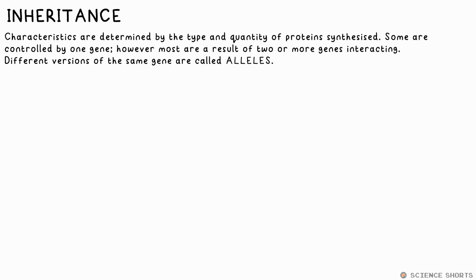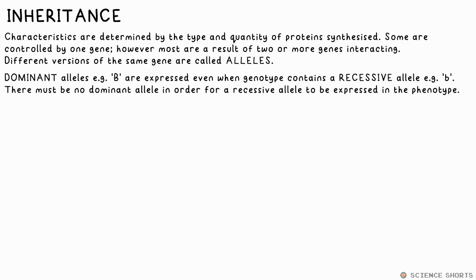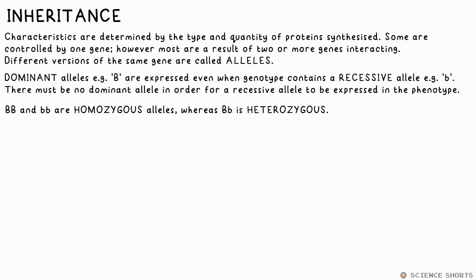Some characteristics are controlled by just one gene, like colourblindness. These different types of the same gene are called alleles. Usually characteristics are dependent on two or more genes, but keeping things simple: dominant alleles are those that result in a characteristic being expressed even if there's another (recessive) allele present. If you have big B and little b for eye colour — big B being brown, little b being blue — you will have brown eyes. It's only when there's no dominant allele that the recessive allele is expressed. So me having blue eyes, I must have little b, little b. Big B, big B or little b, little b are homozygous genes as they only have one type of allele, whereas big B, little b is what we call heterozygous.